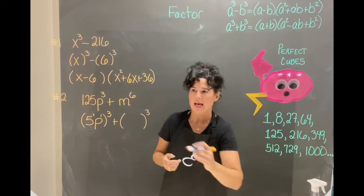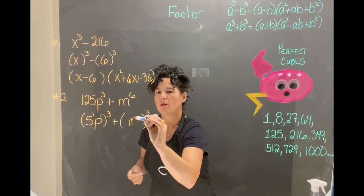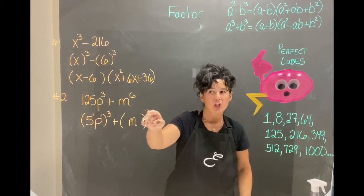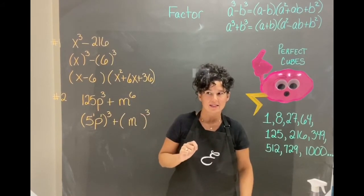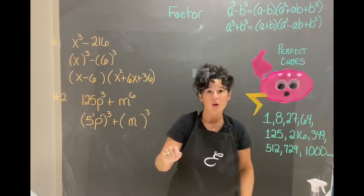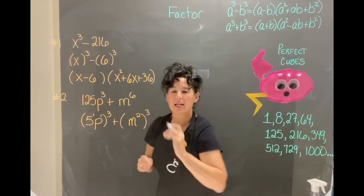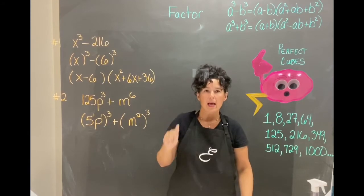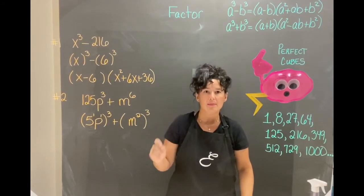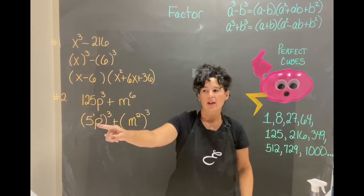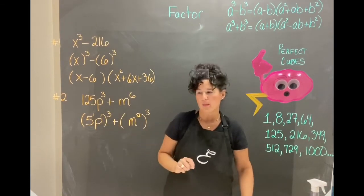All right, so for the m if we use that, what is the power on m going to be so that when I cube it I'm back to 6. If power to a power multiply, that's going to be squared. m squared times m squared times m squared is back to m to the sixth. Now that we've identified our a and b in the formula, we're ready just to follow the formula.